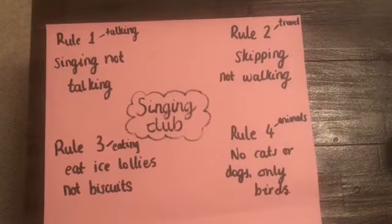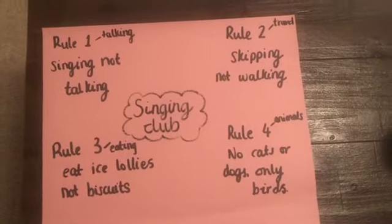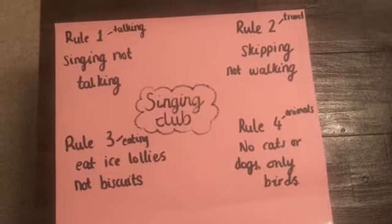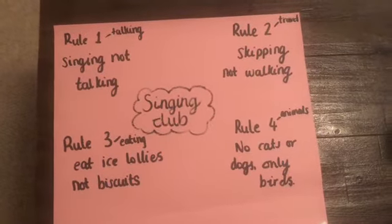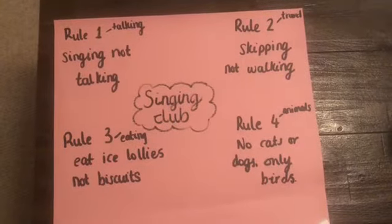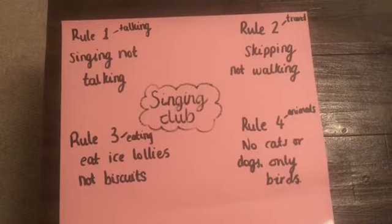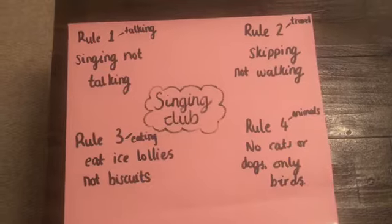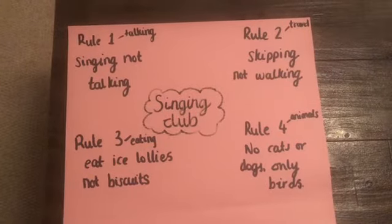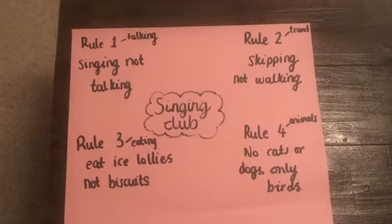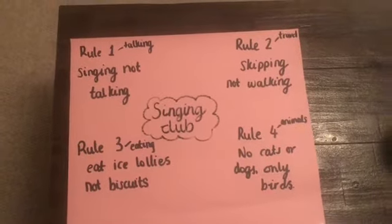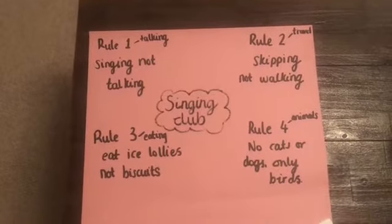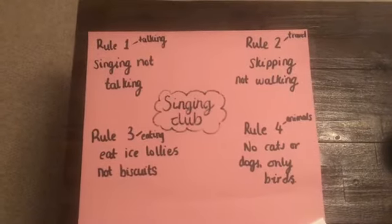My first rule, linked to talking, is that you can sing at singing club, but definitely not talk. Rule two, about travel, is that you're only allowed to skip to singing club — not walk. Rule three, about eating, is that ice lollies are allowed, but no biscuits — ice lollies keep our throats ready to sing, whereas biscuits are too crumbly. Rule four, about animals, is that we don't want cats and dogs, but we want birds because birds can sing and help us sing some really tuneful songs. So those are my rules based on the werewolf club poem. Come up with your ideas, thinking about how you're allowed to talk, get there, what to eat, and what animals are allowed. That's your first task.